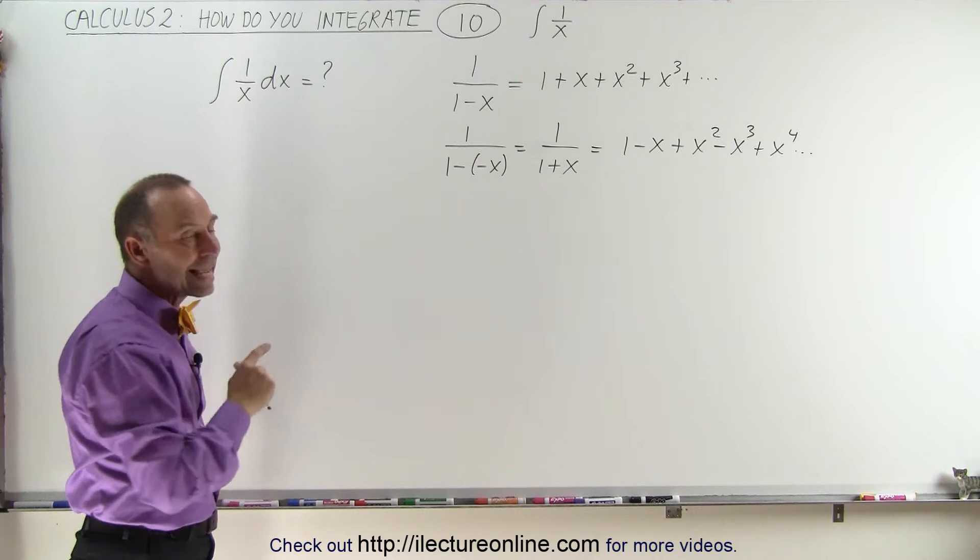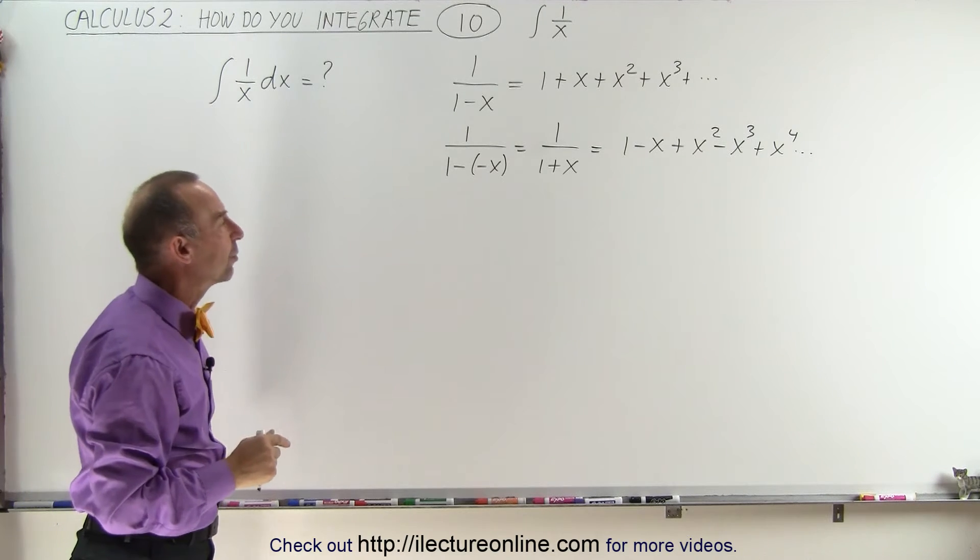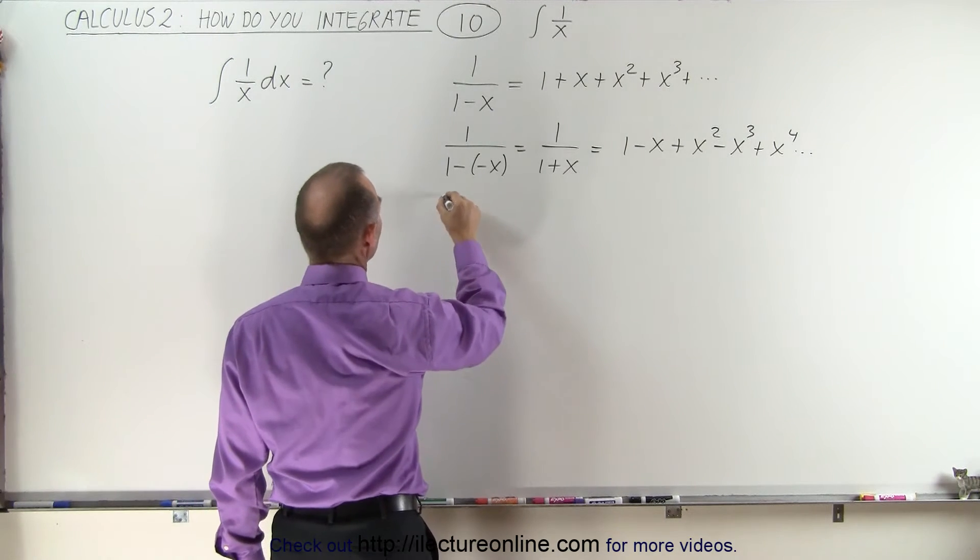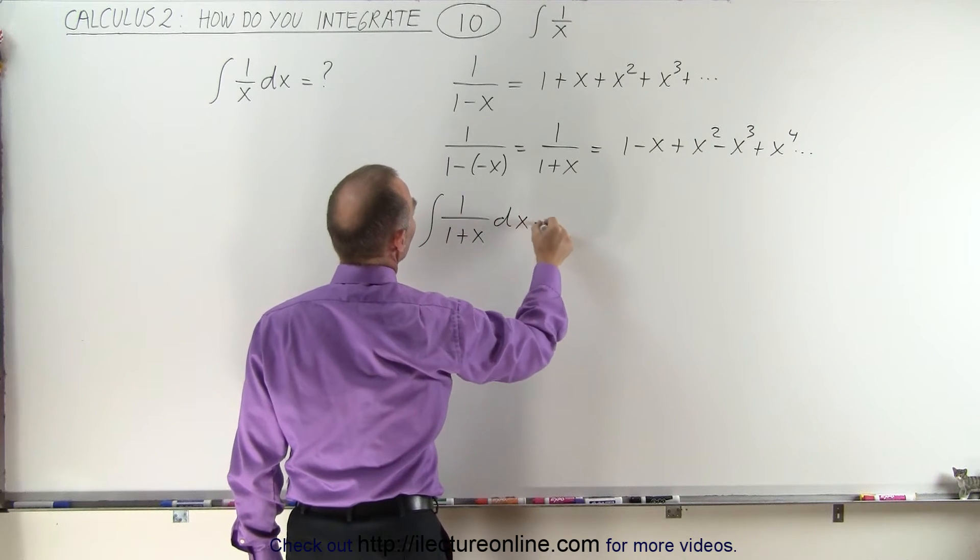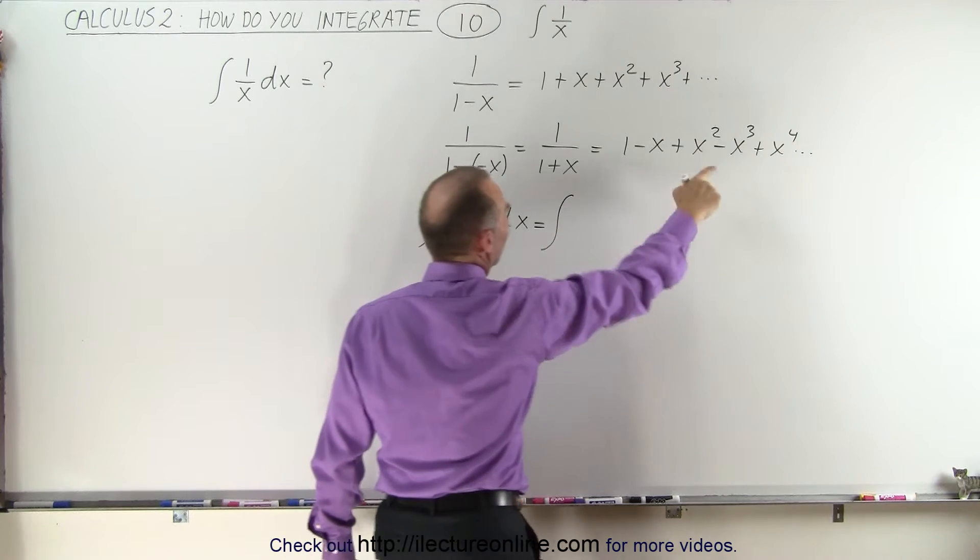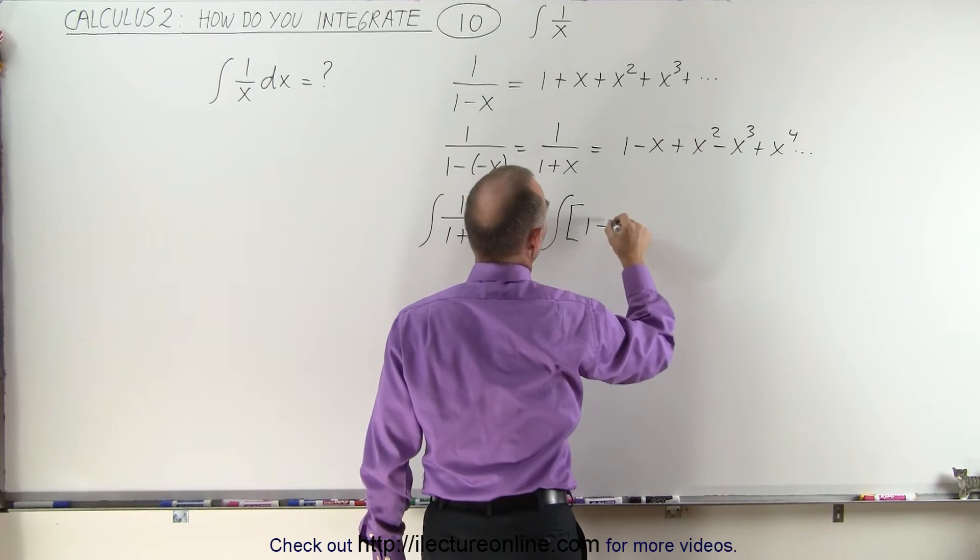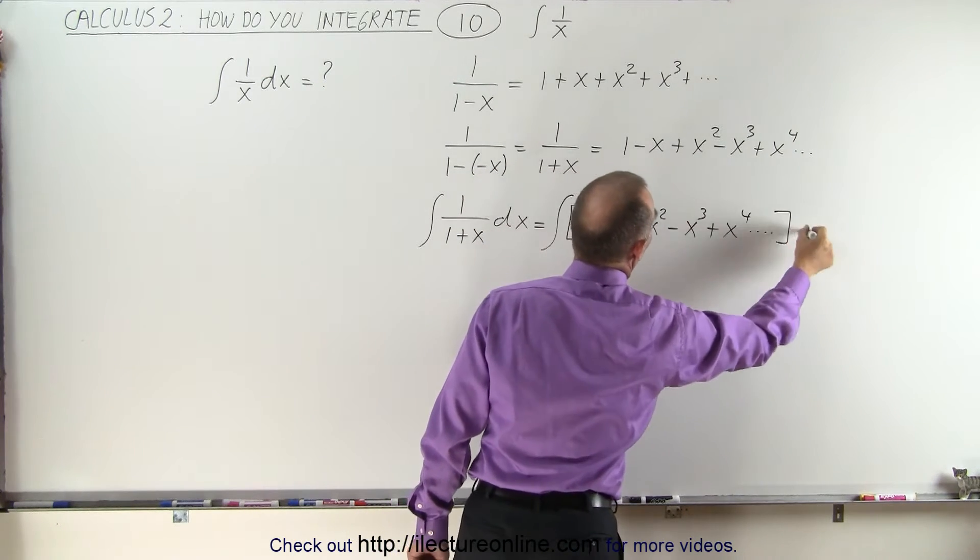Now, let's take the integral of both sides. So what I'm going to do is I'm going to take the integral of 1 over 1 plus x dx and set it equal to the integral of what we have here, which is 1 minus x times dx.